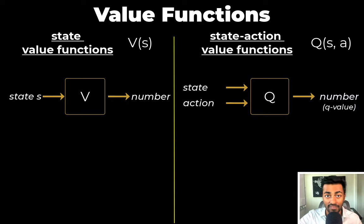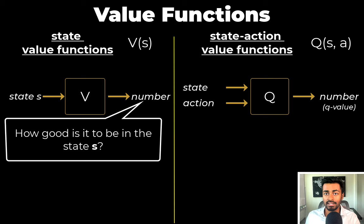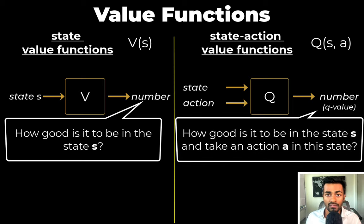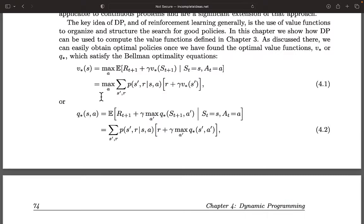The state value V(s) will quantify how good is it to be in the state S and take an action A. The equation of the state value looks like this, whereas the equation of the state-action value looks like this. And as complex as they look, it's actually very intuitive. We'll now start explaining the intuition with a simple example and then come back to how we can write it as these mathematical formulas.